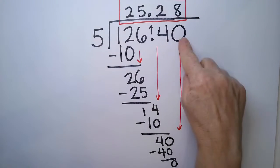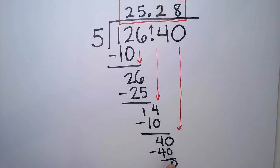So we just keep adding zeros until we get no remainder, and that will finish off the number, or until we get maybe a repeating decimal, or you just decide that's enough digits. That's all I need.